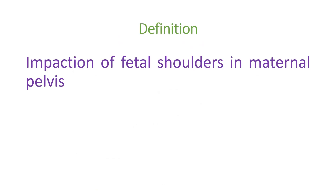The exact definition of shoulder dystocia is the impaction of fetal shoulders in the maternal pelvis — the shoulders get caught inside the maternal pelvis.